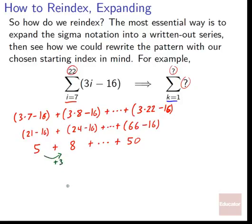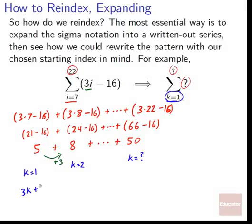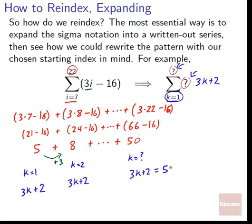Since we want k equals 1 and the values go up by 3 each time, we try 3k plus 2. Checking: k=1 gives 3(1)+2=5 ✓, k=2 gives 3(2)+2=8 ✓. So the expression is 3k plus 2. For the upper limit: if 3k plus 2 equals 50, then 3k equals 48, so k equals 16. Another way: the difference between original upper and lower limits is 22 minus 7 equals 15, and 1 plus 15 equals 16. Either way, our upper limit is 16.